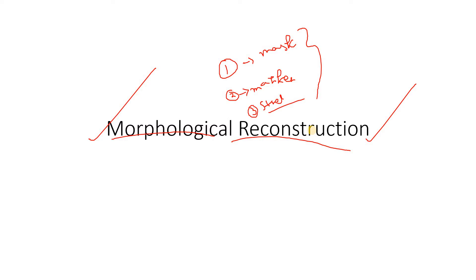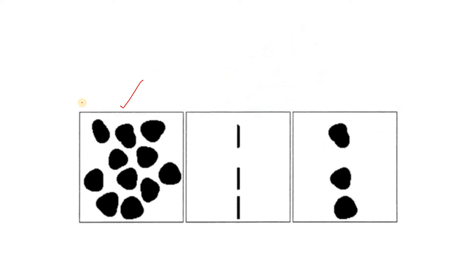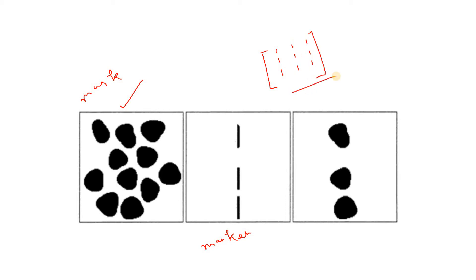Let us go to an example and try to understand the algorithm. This is our original image — this is called the mask. This is the image on which we will be applying the morphological operation — this is called the marker. And this is our output. For the structuring element, we generally take a 3×3 matrix of ones.